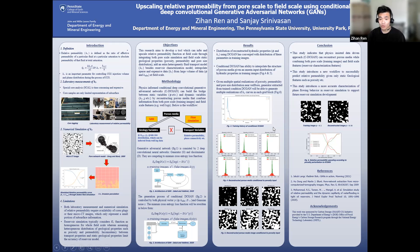More interestingly, the conditional DC-GAN has the ability to interpolate the structure of porous media given an unseen input distribution of geologic properties not present in training images. As the picture here indicates, when we perturb the input porosity, the output reconstructed porosity is also changing. When we perturb the porosity input to the generator, the output macro CT image is also changing — we can see the void space increasing as porosity increases, which is physically reasonable.